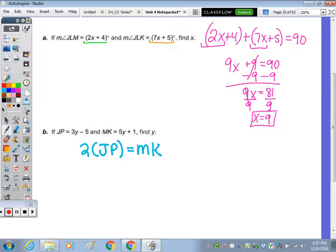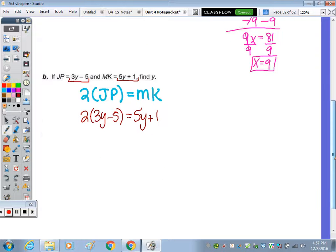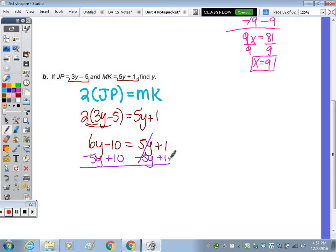Plugging in the algebraic expressions: 2 times (3y minus 5) equals 5y plus 1. Distributing, we get 6y minus 10 equals 5y plus 1. To combine the y's, I'm going to subtract 5y from both sides. Then add 10 to both sides. 6y minus 5y is y, and 1 plus 10 is 11. So y equals 11.